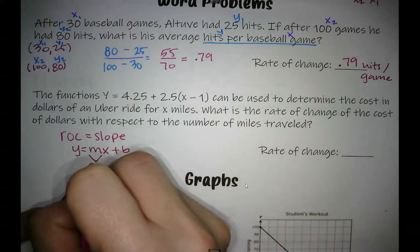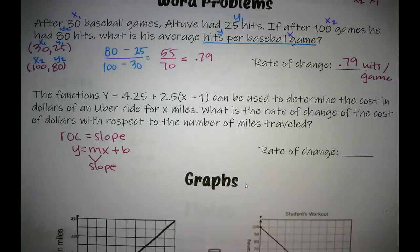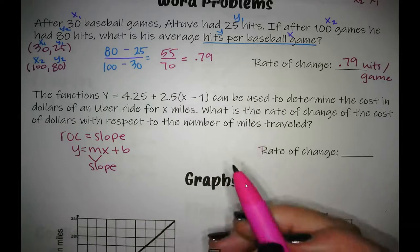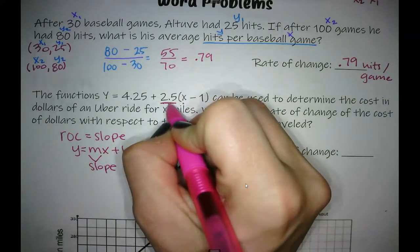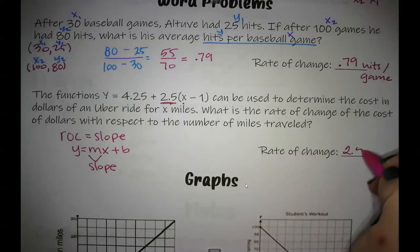And it is my B, I mean my M, the number around the X, that is my slope. This time it's written a little bit funny, but I still am looking for where that X is and that number directly in front of that X, and that is my rate of change.